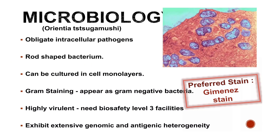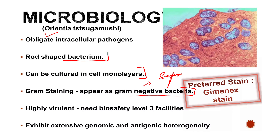Orientia tsutsugamushi is an obligate intracellular pathogen — it must remain inside the cell. It is rod-shaped bacteria that can be cultured in cell monolayer. On gram staining it appears as a gram-negative bacteria, meaning it takes the safranin stain. The most preferred staining method is the Giemsa stain.